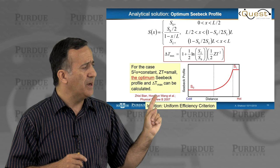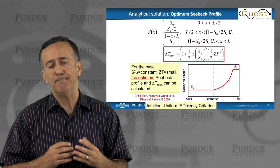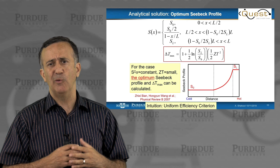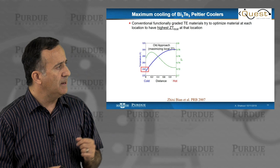These are all kind of toy examples because they assume S squared sigma is constant, ZT is small. It's good to find analytical solution. But, you know, a typical complaint would be, but how does it apply in a real material where material properties are not necessarily give you Seebeck coefficient times electrical conductivity constant, and temperature dependences, and so on.